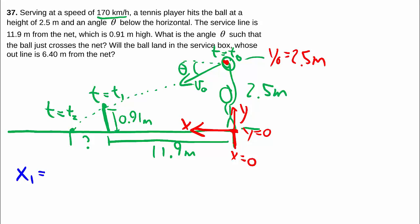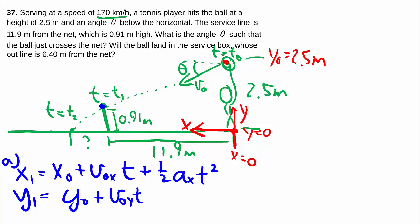and we'll call y equals 0 at the ground. So very critically, my y0 is not 0 this time, it's up at 2.5, because at time equals t0, my ball is up here at 2.5 meters. Again we can write for part a anyways, to find out what happens as it gets to that point.